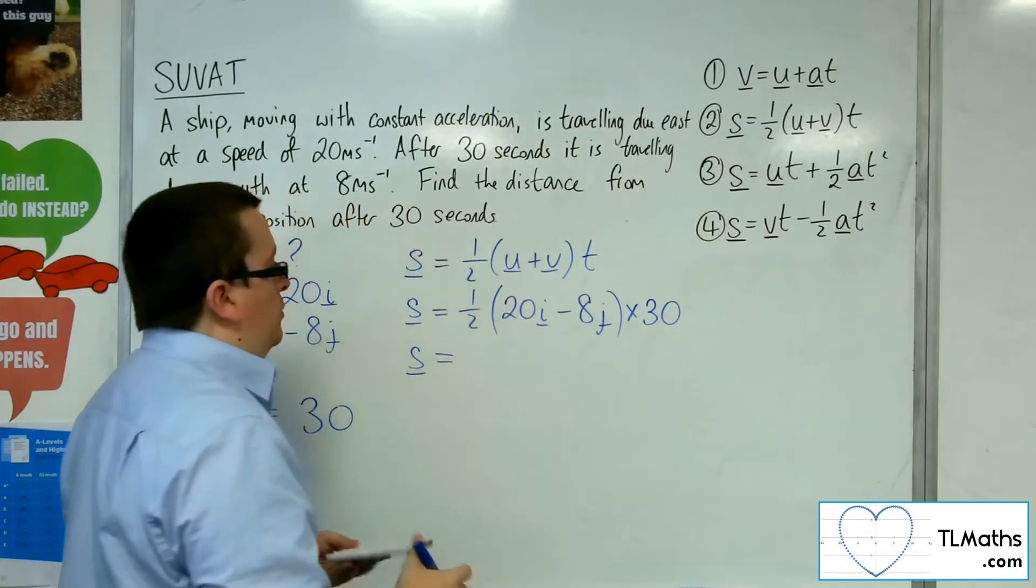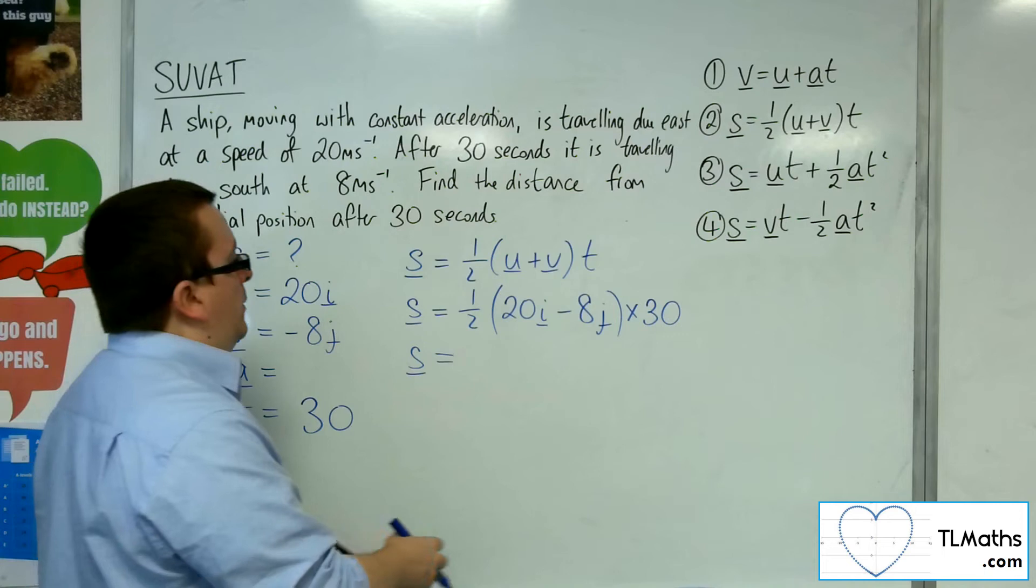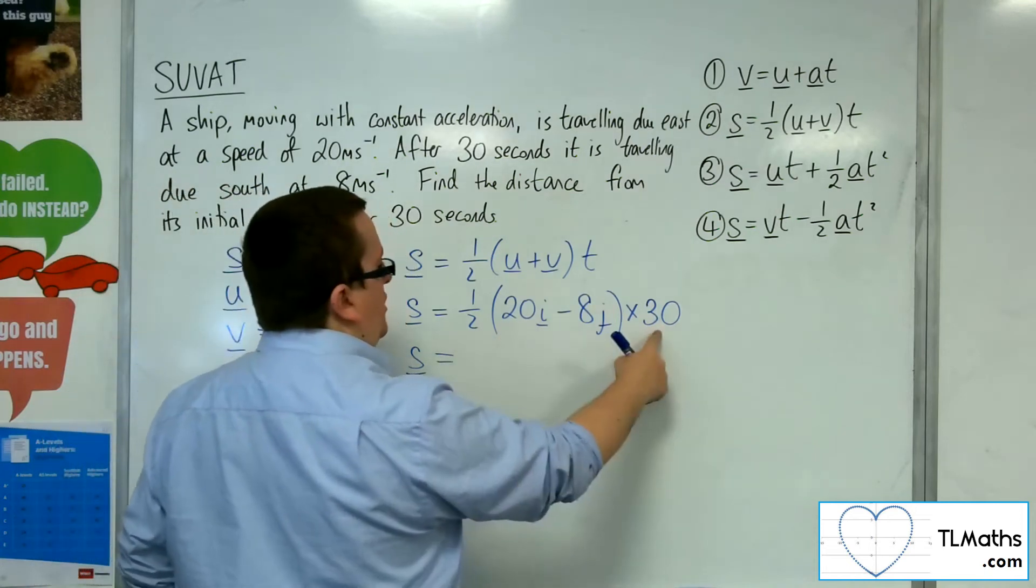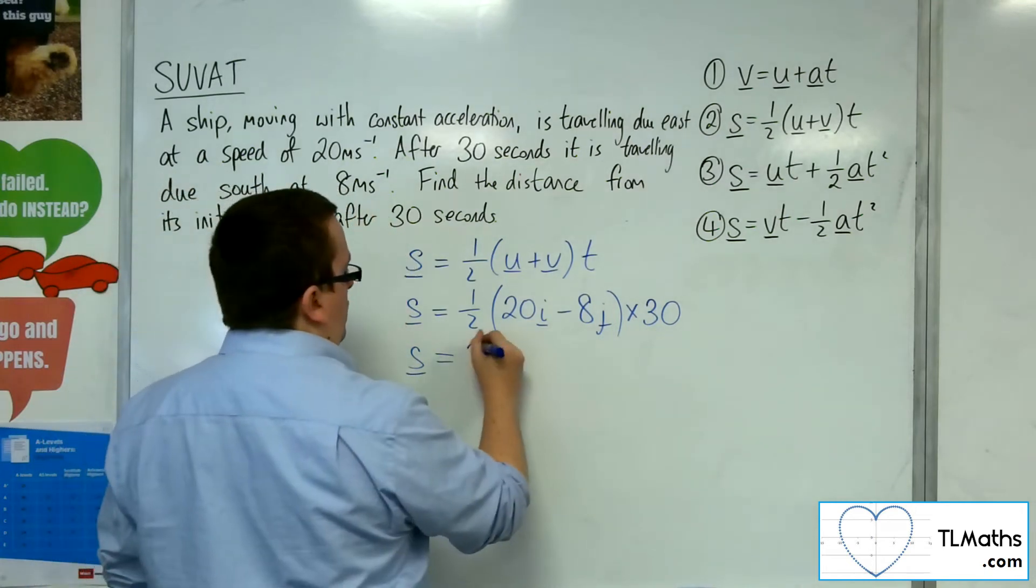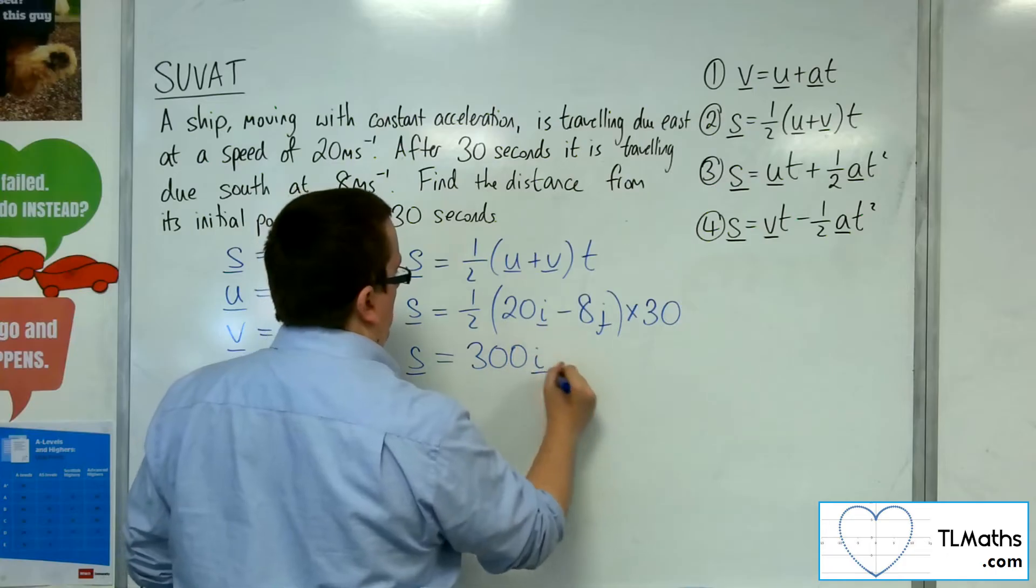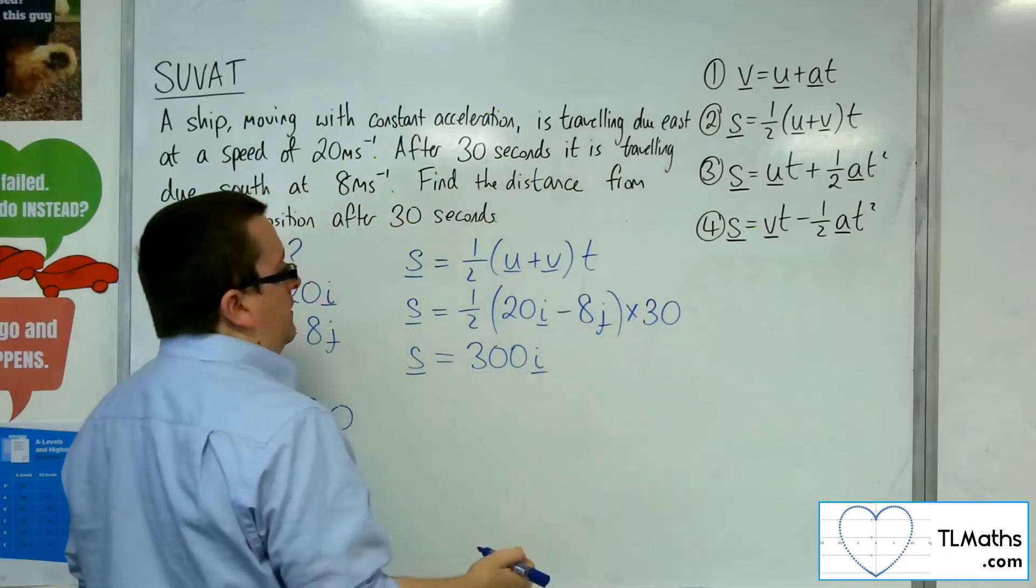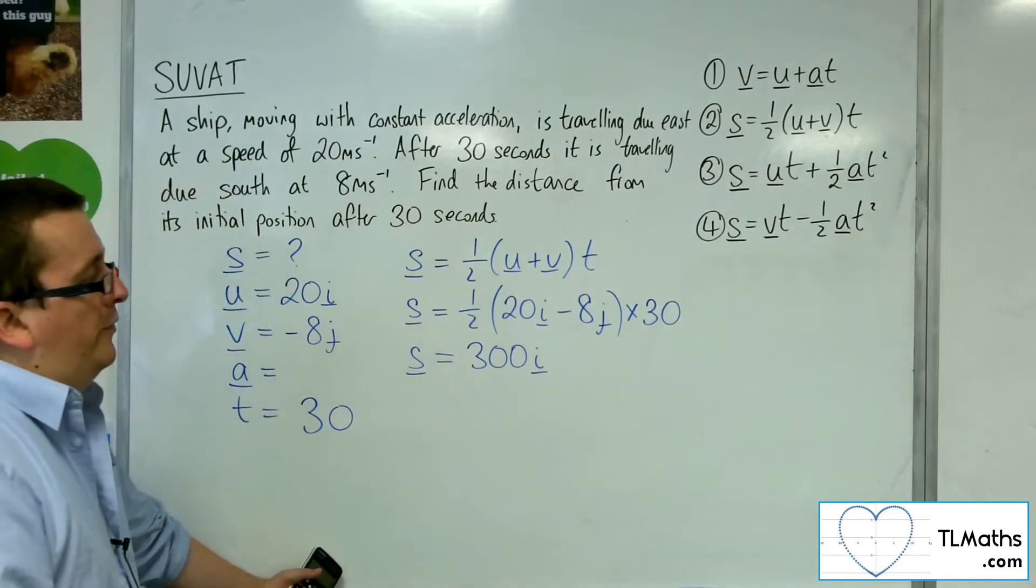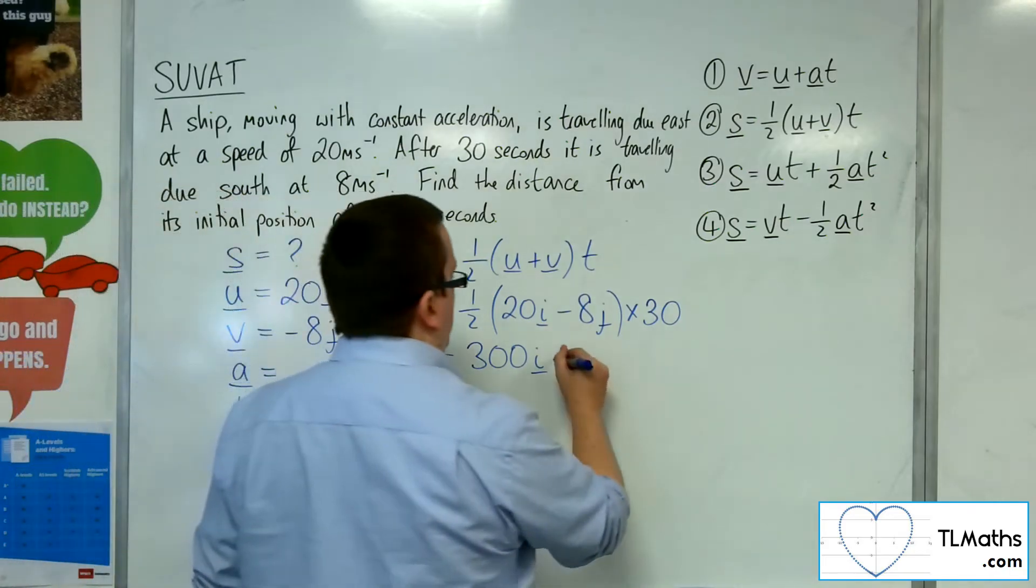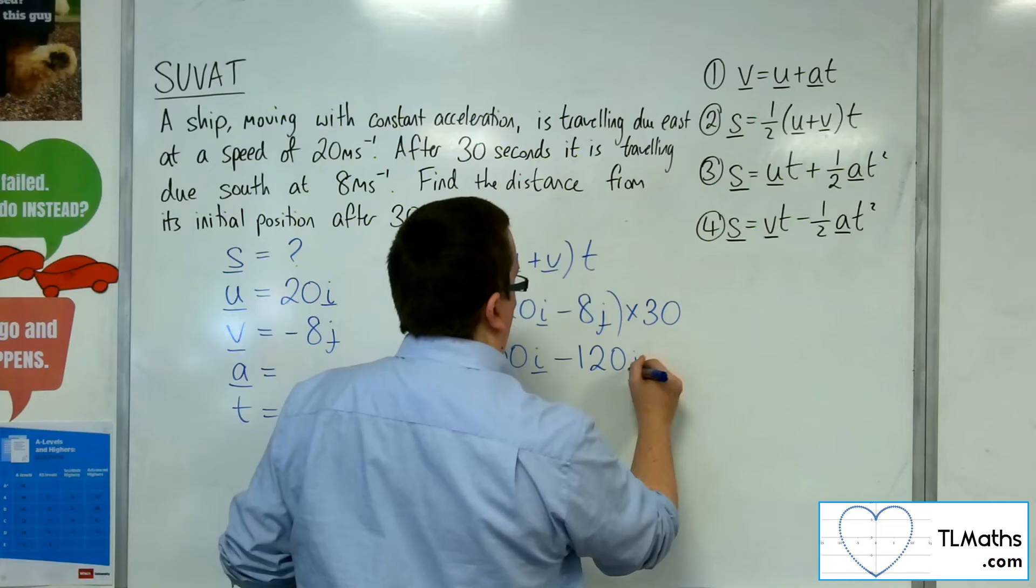So S equals, we've got ½ × 20 × 30, so that's 300i. And then we've got ½ × -8 × 30, so -4 × 30 is -120j.